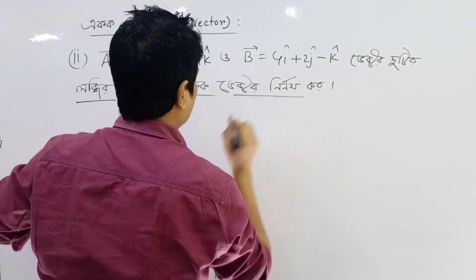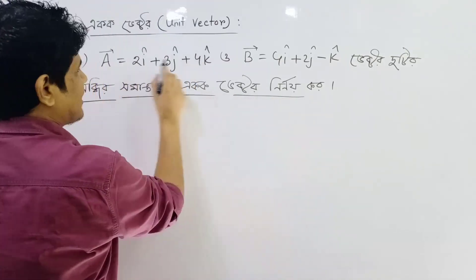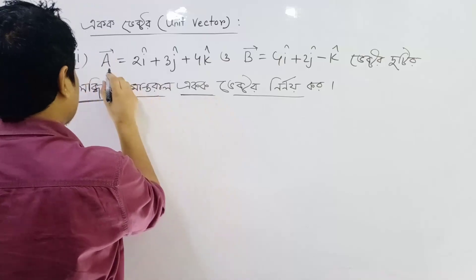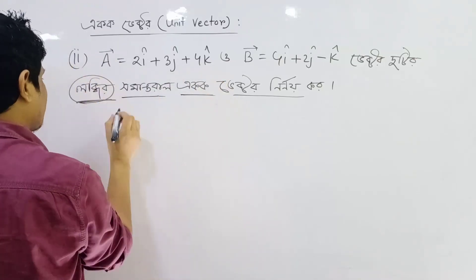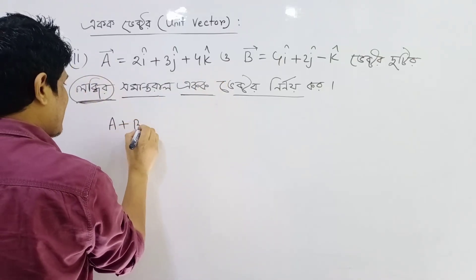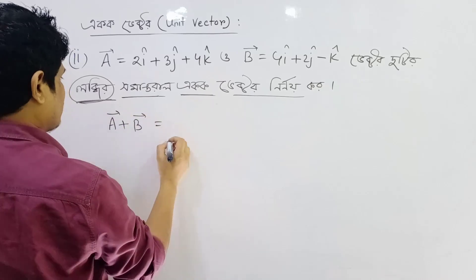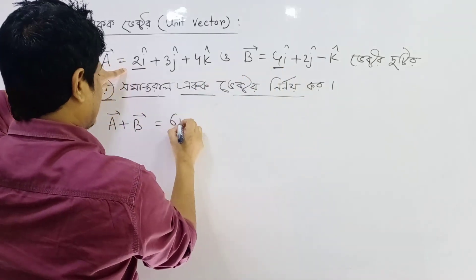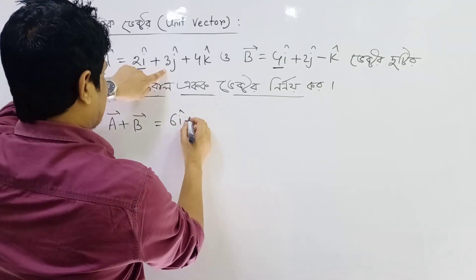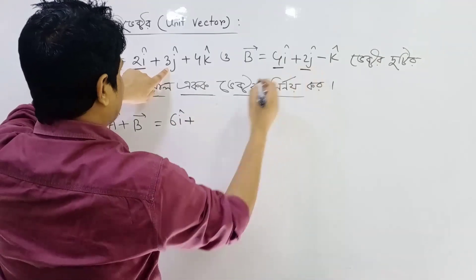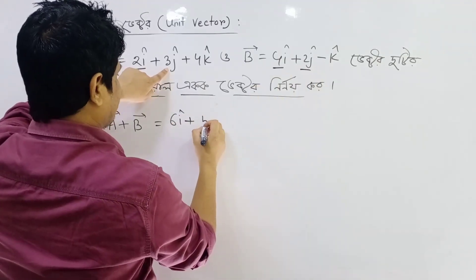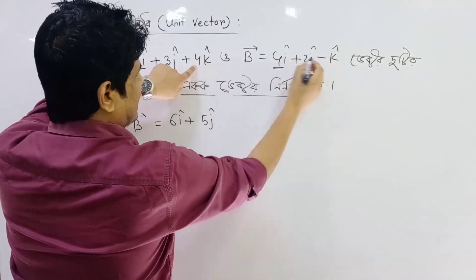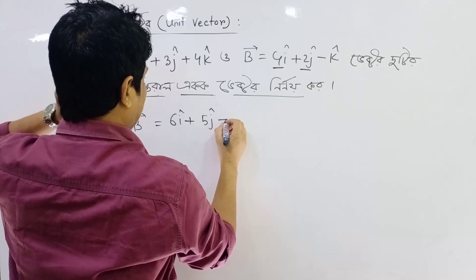This is a vector. 2i vector — a plus b vector, so 2i and 4i gives 6i. Plus 3j and 2j gives 5j. And 4k minus k — which is 3k.